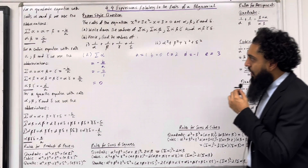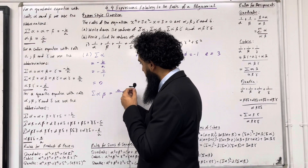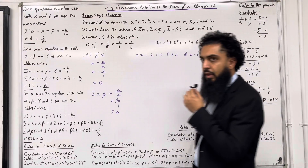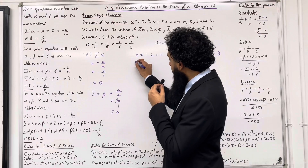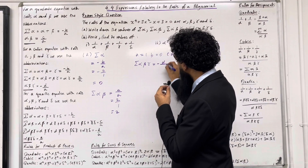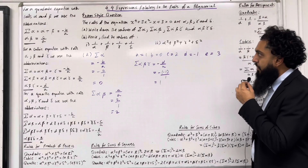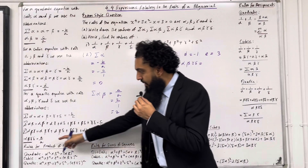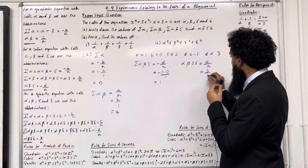Next up, sum of alpha beta is given by C over A, which is 2 over 1, equal to 2. Then sum of alpha beta gamma is equal to minus D over A, which is minus (minus 1) over 1, equal to 1. And finally, alpha beta gamma delta is given by E over A, which is 3 over 1, equal to 3. This completes part A.